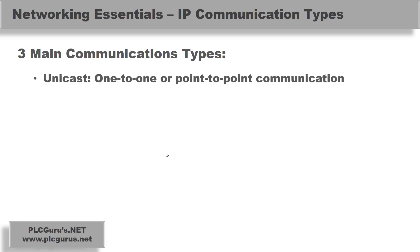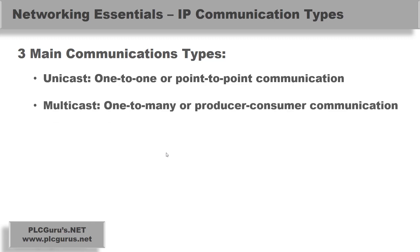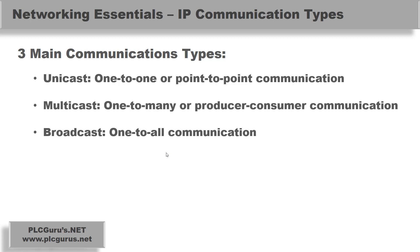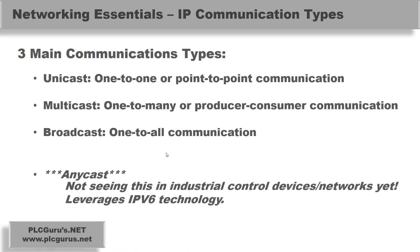We really have three main communication types to talk about today. There is a fourth, which I'll mention, but we're not really seeing it yet in the industrial controls world. Starting at number one, we have Unicast — a one-to-one or point-to-point communication type. Next we have Multicast — a one-to-many or producer-consumer communication type. And we have Broadcast — a one-to-all communication.